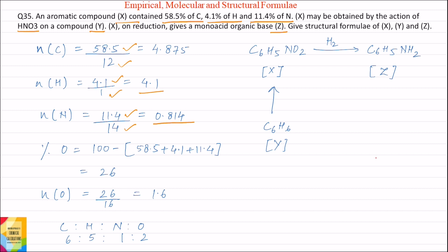Percentage of oxygen is equal to 100 minus percentage of carbon plus percentage of hydrogen plus percentage of nitrogen. So percentage of oxygen is equal to 26. Moles of oxygen is percentage of oxygen divided by atomic weight of oxygen which is equal to 1.6 moles.